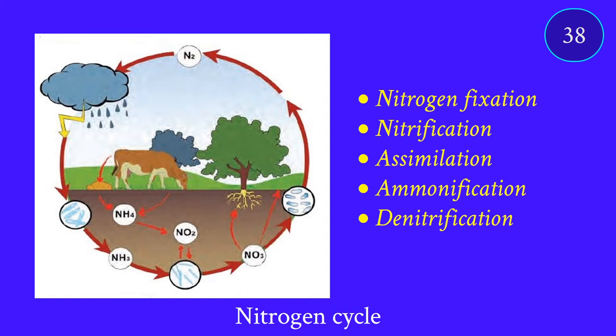Then comes the nitrogen cycle, which is a bit complicated. The steps are nitrogen fixation, nitrification, assimilation, ammonification, and denitrification. How does nitrogen enter? The atmosphere has 78% nitrogen, but plants cannot use it in its free elemental form. It has to be converted into nitrogen compounds through nitrogen fixation.